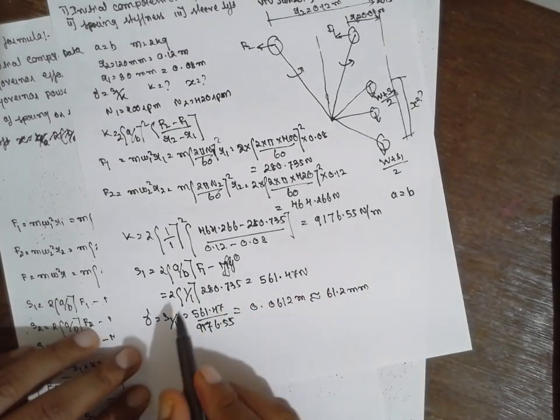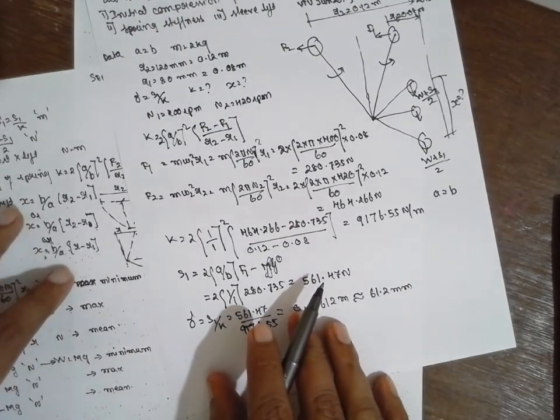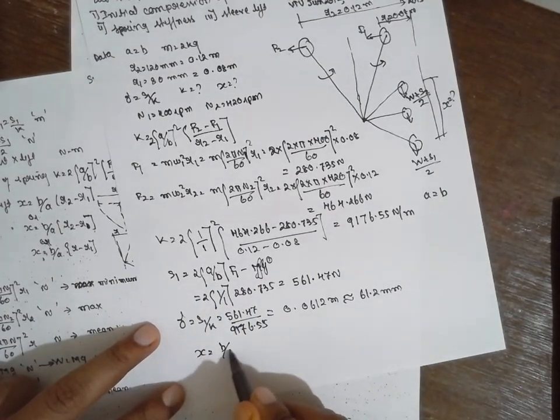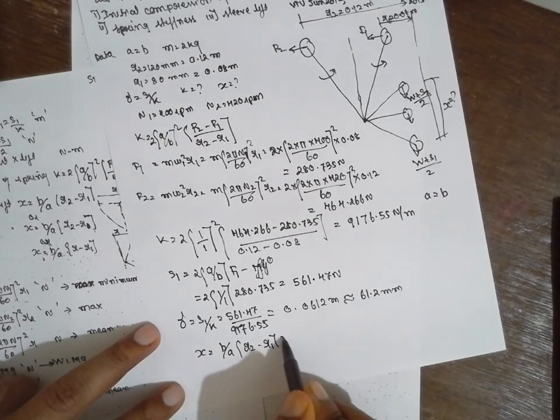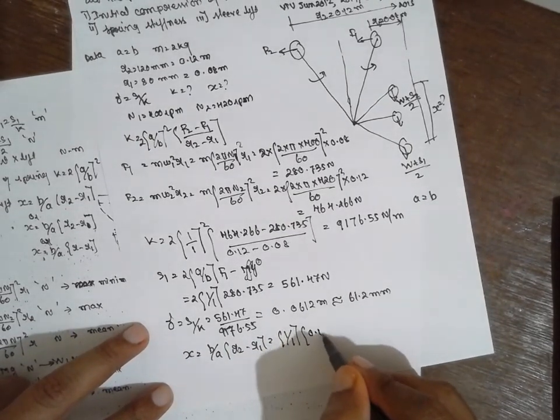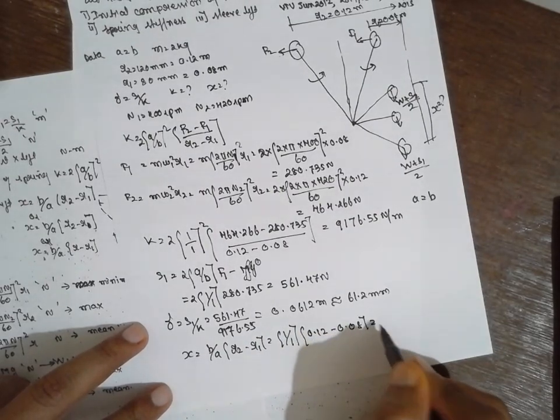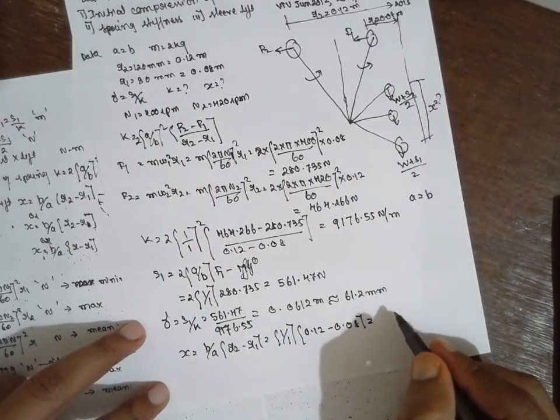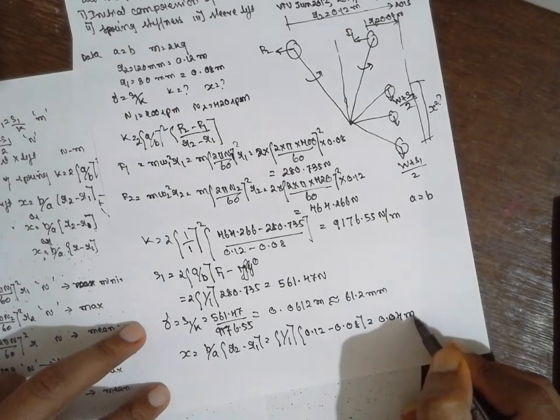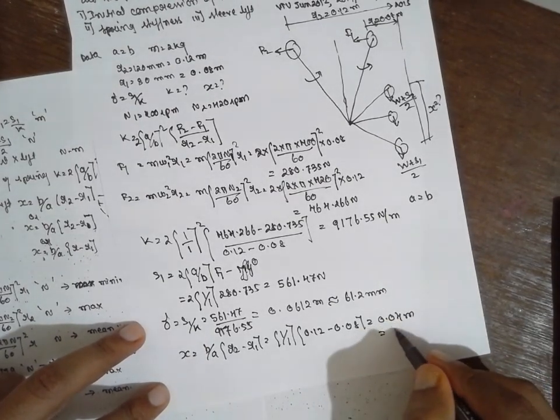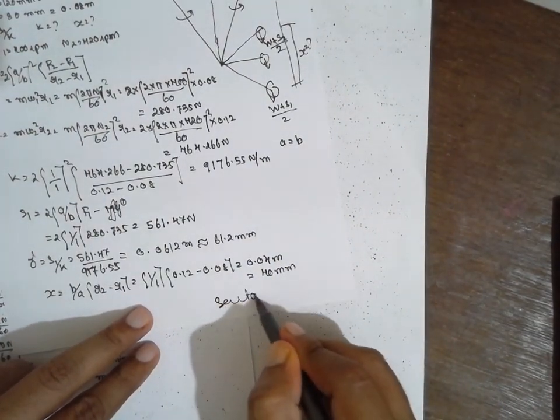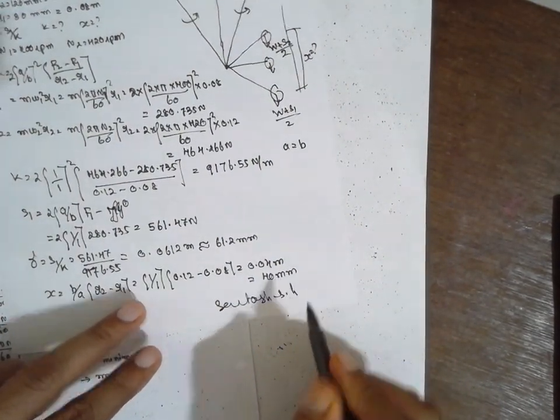Now X we have to find out. What is X? This is the formula for X for extreme radia. X is equal to B by A R2 minus R1. B by A is nothing but 1 divided by 1. R2 is nothing but 0.12 minus 0.08. The X value will be 0.04 meter, in terms of mm it will be 40 mm. I am Satyash Gaydankar. Thank you very much.